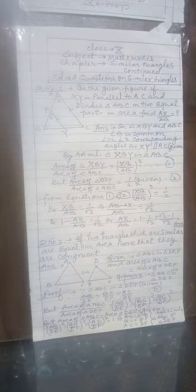Or XB can be written from the figure as AB minus AX upon AB which is equal to 1 by root 2. And then you can split AB minus AX upon AB as 1 minus AX upon AB. So AB upon AB will get cancelled.